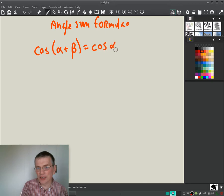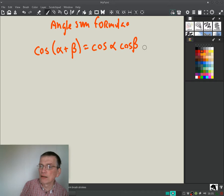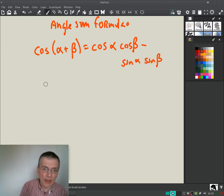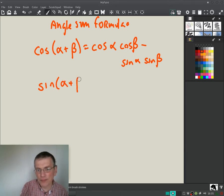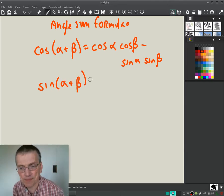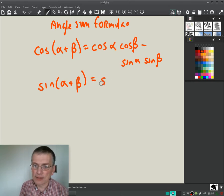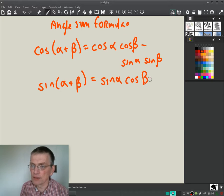Cosine alpha times cosine beta minus sine alpha sine beta. And the sine form, the sine angle sum form, is sine alpha cosine beta plus cosine alpha sine beta.